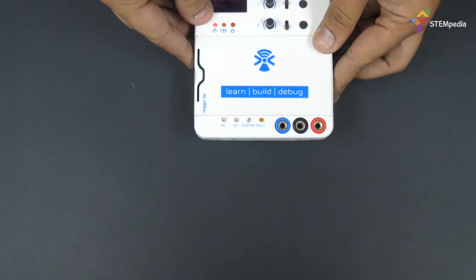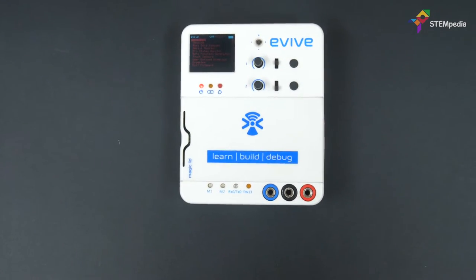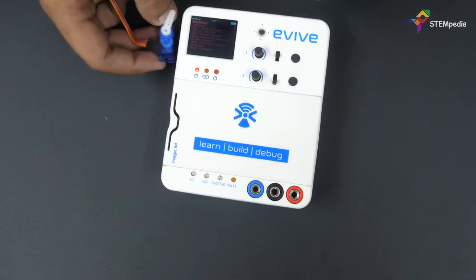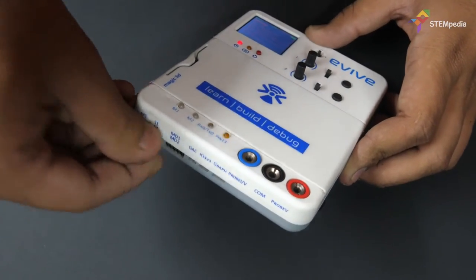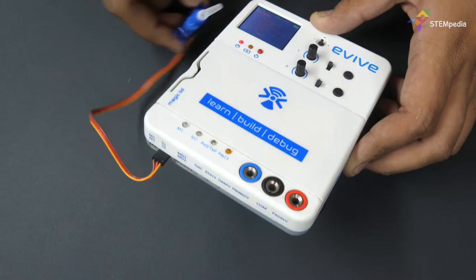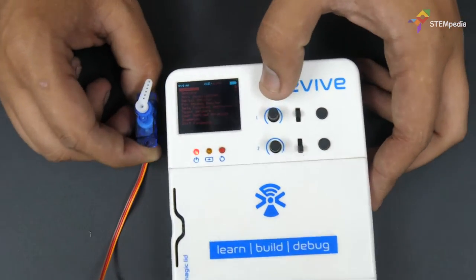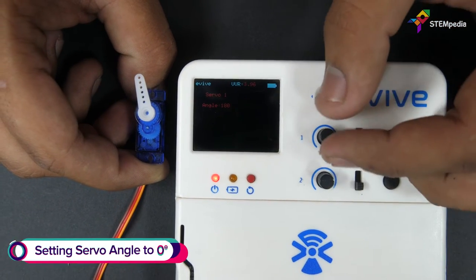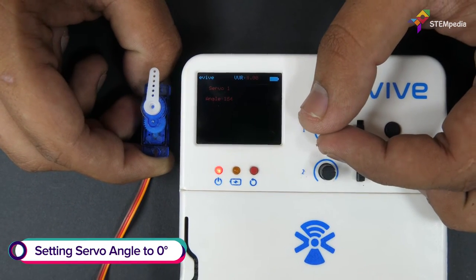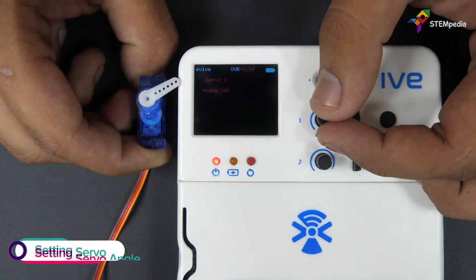Now, let's make the toll barrier mechanism. For that, we'll need a servo motor. First, let's test the servo. Connect it to evive's servo channel 1. From evive's menu, select controls, then servos, then servo 1. Set servo motor angle to 0 degrees using evive's potentiometer 1.